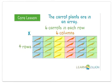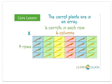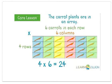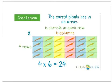We can read an array from left to right to build a multiplication equation. So this is four rows times six columns. Four times six equals twenty-four. There are twenty-four carrot plants in the garden.